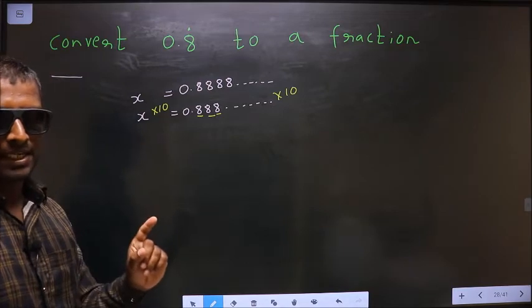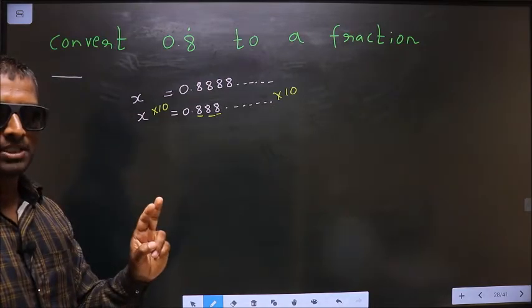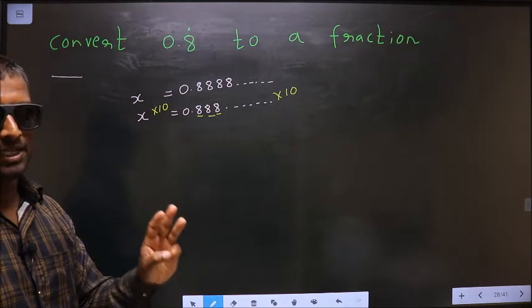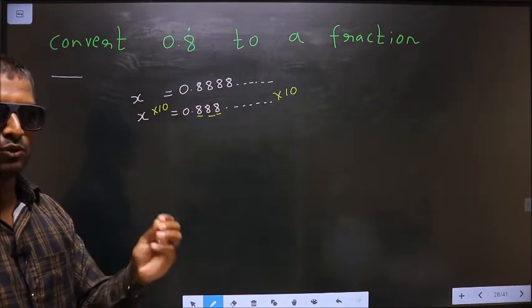One number is repeating, multiply by 10. Had it been 2 numbers being repeated, multiply by 100. Had it been 3 numbers, multiply by 1000. It is a rule.